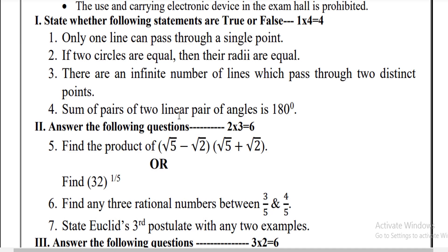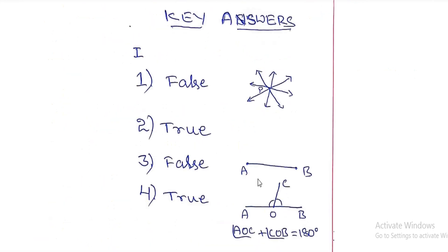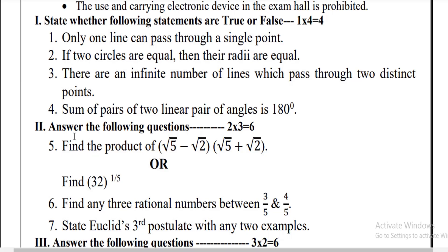The fourth statement: sum of a pair of linear angles is 180 degrees. Here AOC and BOC are linear pairs because AOB is a straight line, so the total angle is equal to 180 degrees. That means the sum of these two angles is equal to 180 degrees — that statement is true.